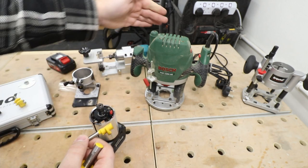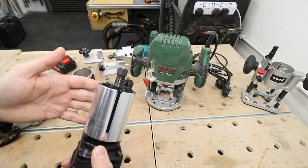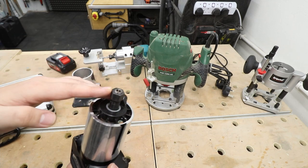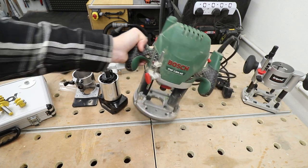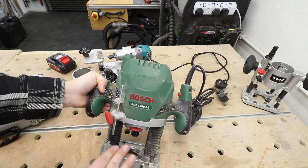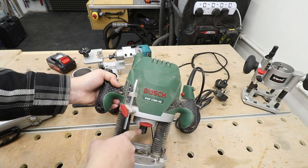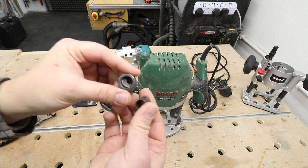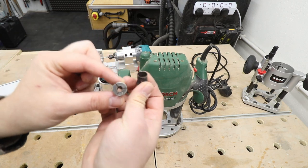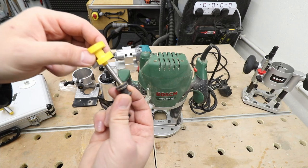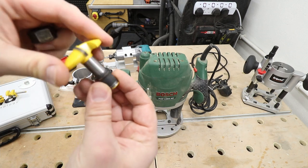Whereas the smaller routers like this trim router will only be able to take the quarter of an inch due to the size and power of this tool. However, usually the bigger plunge routers are able to take a quarter of an inch and half an inch, and that is done by the collet. You can exchange the collets—this one is quarter of an inch, that's a half an inch. I'm just going to quickly show you that.